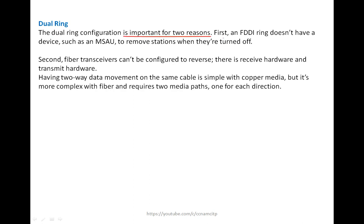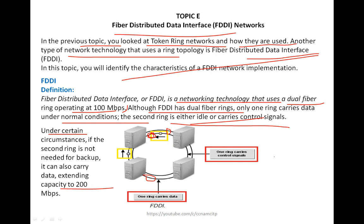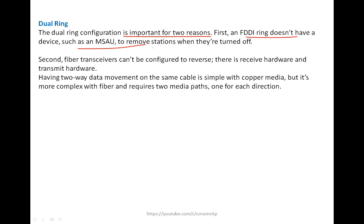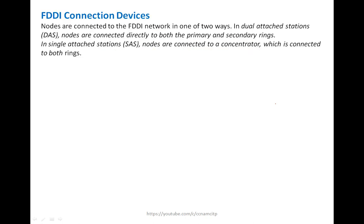The dual ring configuration is important for two reasons. First, an FDDI ring doesn't have a device like MSAU to remove stations when they are turned off. Second, fiber transceivers can't be configured to reverse their receive and transmit hardware. Having two-way data movement on the same cable is simple with copper media but more complex with fiber, requiring two media paths, one for each direction.